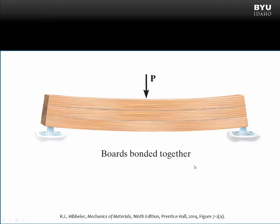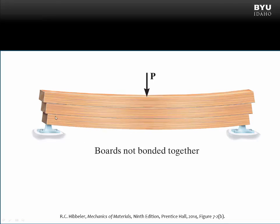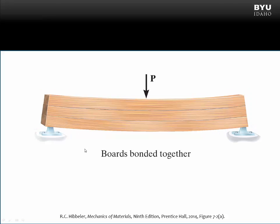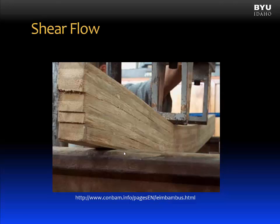Let's begin by considering this beam shown. It is made by bonding three boards together, and there is a load applied. When that load is applied, the beam will deflect as shown. If these boards had not been bonded together, we would expect the boards to be offset at the ends. If we consider the bonded beam again, we recognize that there must be a force resisted by the glue or fasteners bonding these boards together. That force is a shear force, which is trying to cause the boards to slide against one another. That force is called shear flow.